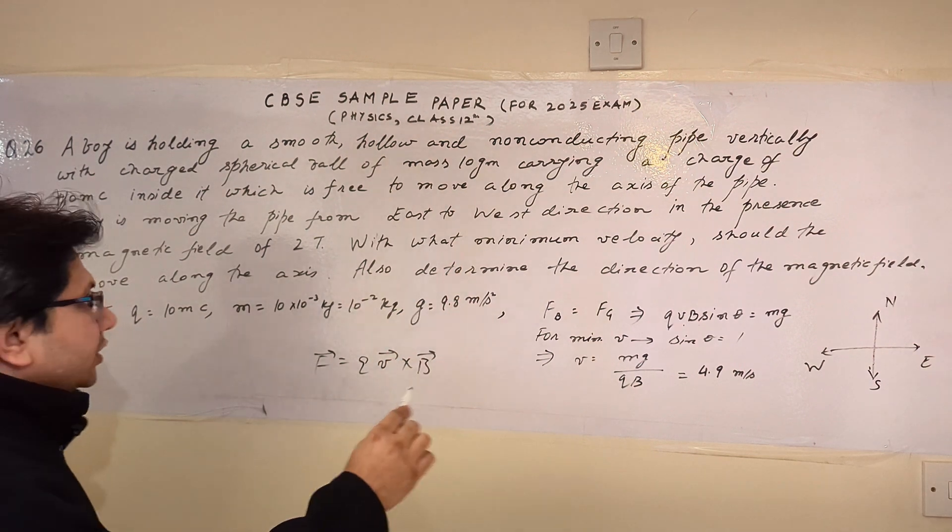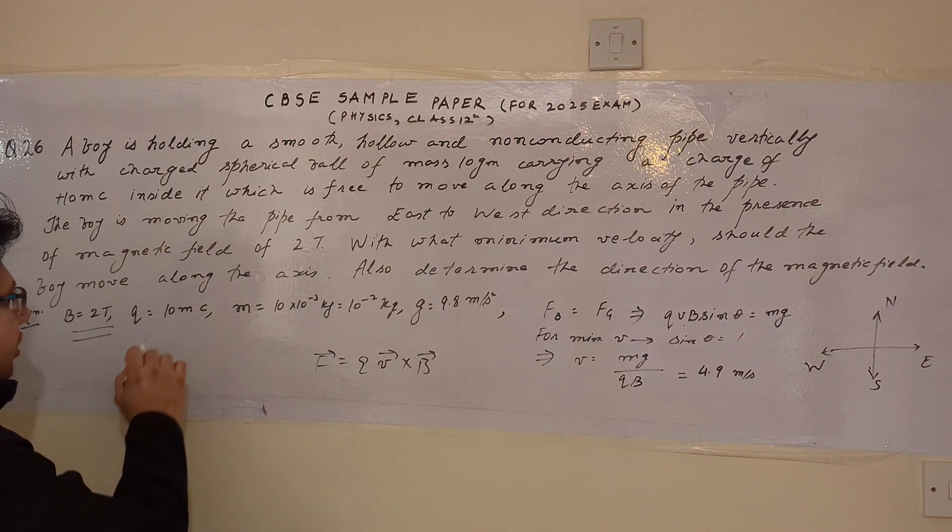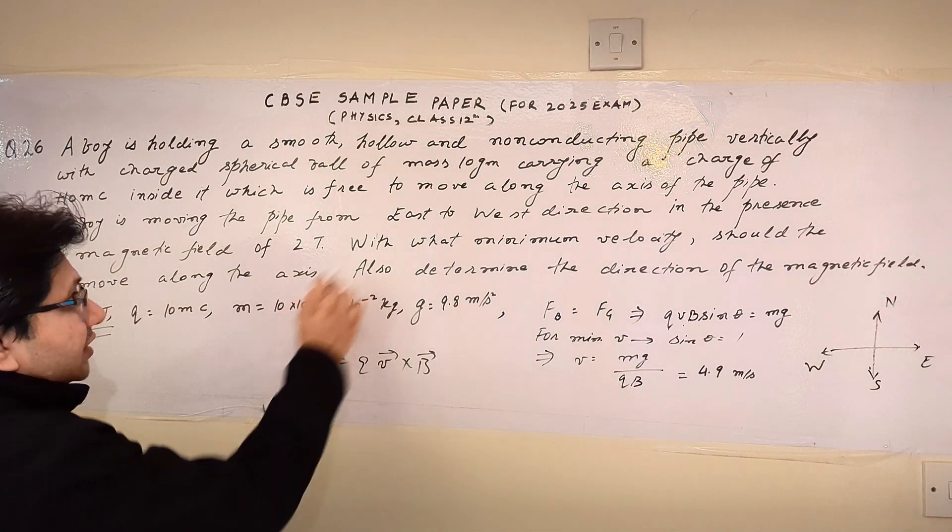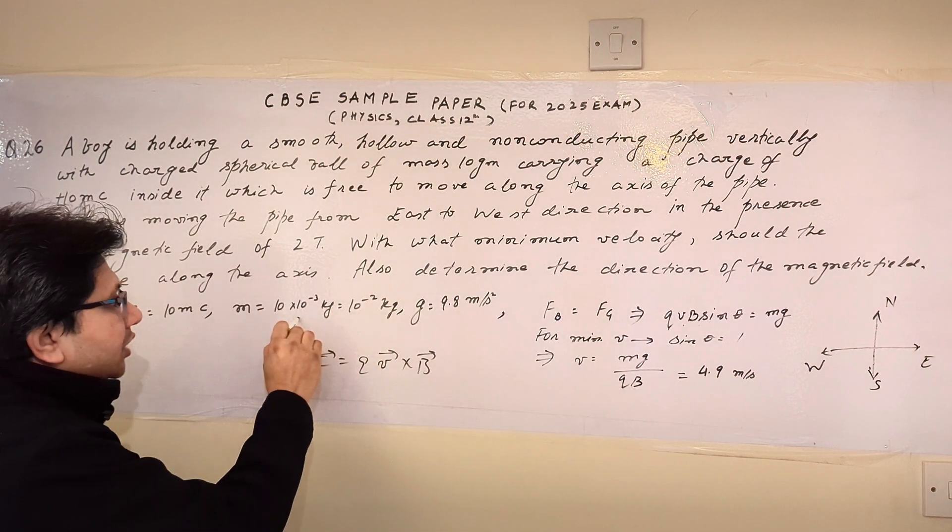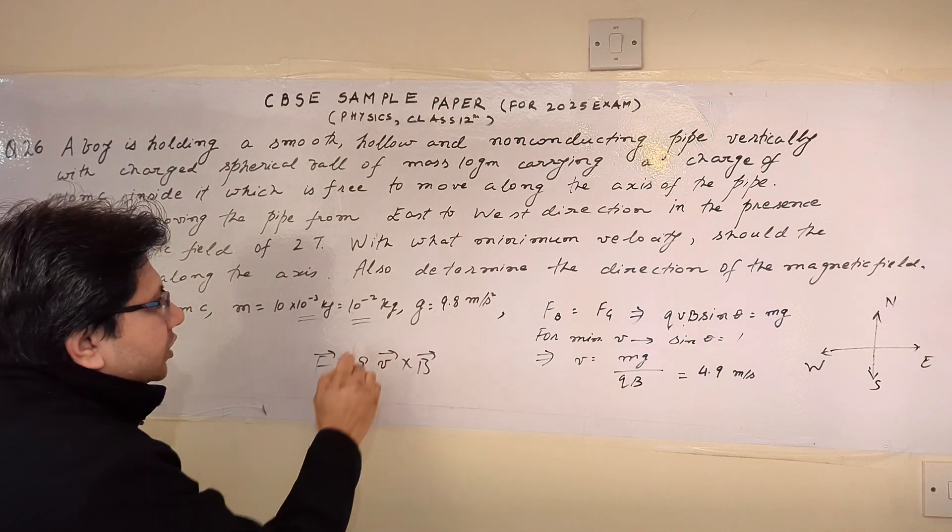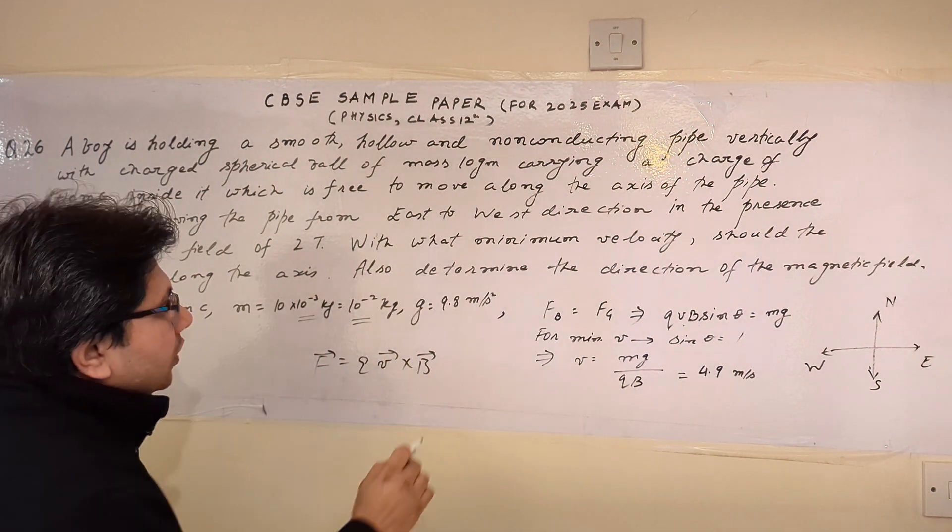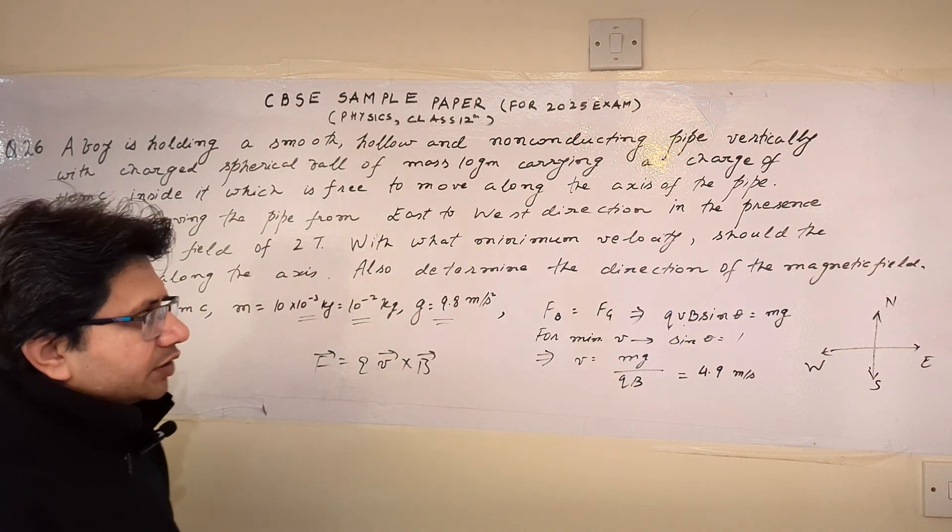So the data given here is the magnetic field is 2 tesla, the charge is 10 millicoulomb, the mass is 10 gram which we have to convert to kg. So we multiply it by 10 raised to the power minus 3, and we get the final value as 10 raised to the power minus 2 kilograms. The gravitational acceleration we know is 9.8 meter per second square.